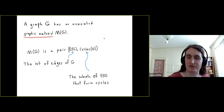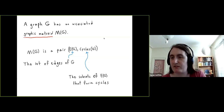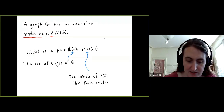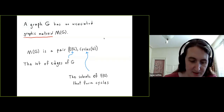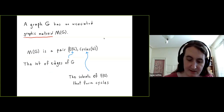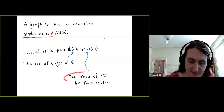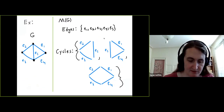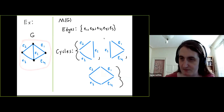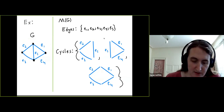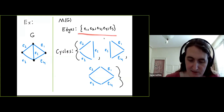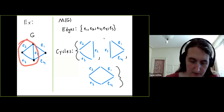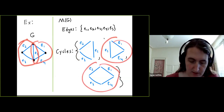Every graph has an associated graphic matroid M of G. Given a graph G, M of G is a pair: first, the set of all the edges of G, and second, the collection of subsets of the edges that form cycles. Here's an example: the graphic matroid consists of the edge set and the data of all the cycles that appear in the graph.